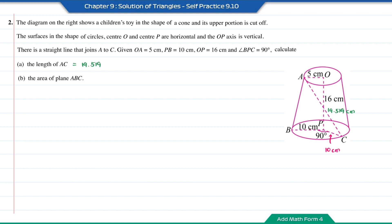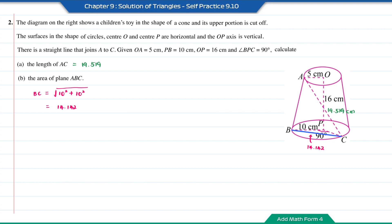Question B: find the area of the plane ABC. The plane ABC is in the shape of a triangle, so we can find the area either using the formula 1/2 AB sin C or the Heron's formula. Looking at triangle PBC, it is a right angle triangle with lengths PB equal to 10 and PC equal to 10. So BC, which is the hypotenuse, can be found using the Pythagoras theorem. BC equals the square root of 10 squared plus 10 squared, which is equal to 14.142. If we can find the length of AB, then we will have all three sides of the plane ABC and can solve the area using Heron's formula.